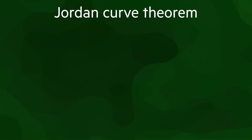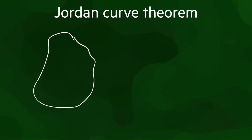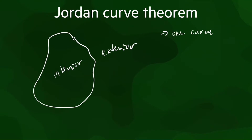Theoretically, boundary representation works because of what is known as the Jordan-Curve theorem in 2D, or the Jordan-Brouwer theorem in higher dimensions. The first of these theorems says that if you draw a closed non-intersecting curve in 2D, it separates the plane into two parts: the interior and the exterior. The key requirements for the curve are that it has to be one single curve, and it cannot touch or intersect itself.